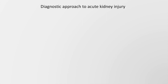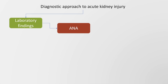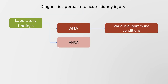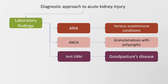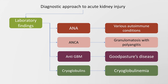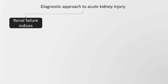Laboratory findings can also diagnose various autoimmune conditions based on anti-nuclear antibody. ANCA can suggest granulomatosis with polyangiitis. Anti-GBM antibody can suggest Goodpasture's disease, and cryoglobulins may be used to diagnose cryoglobulinemia.